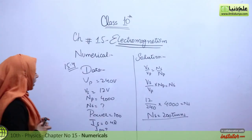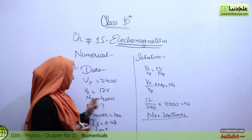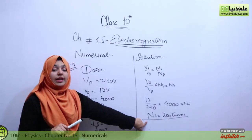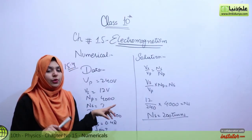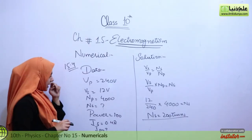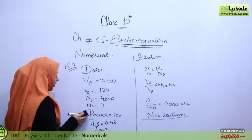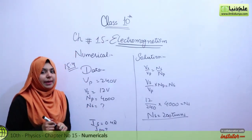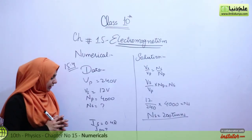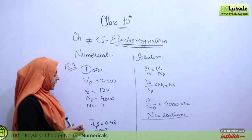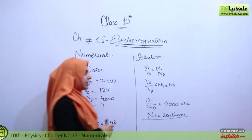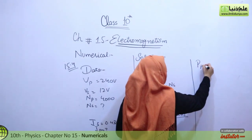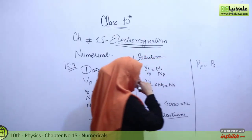So if we observe, NP — the number of turns in the primary coil — is greater than NS. From this we can identify this as a step-down transformer. Secondly, since the transformer is 100% efficient, power in primary equals power in secondary. Now we need to find IP, and IS is given as 0.4 ampere. We will use the power formula.